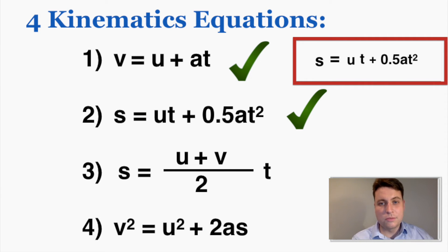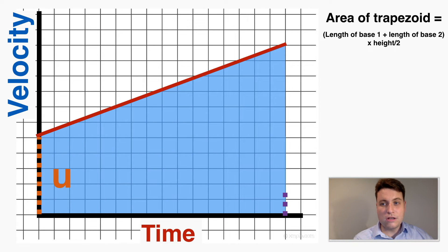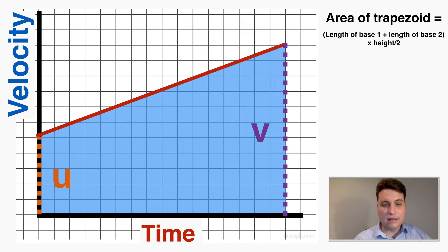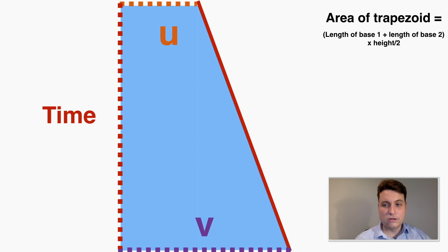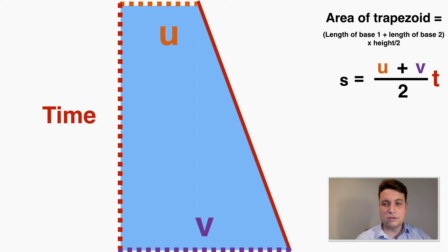The third equation requires the area of a trapezoid formula: base 1 plus base 2, times height, divided by 2. The two parallel bases of this shape are u and v, and the height is time t. Plugging these in, displacement equals u plus v times t over 2, which gives us the third kinematics equation: s equals (u plus v) over 2 times t.